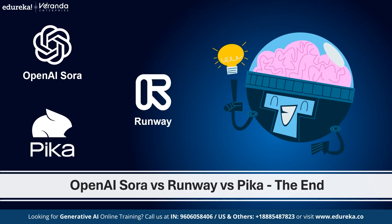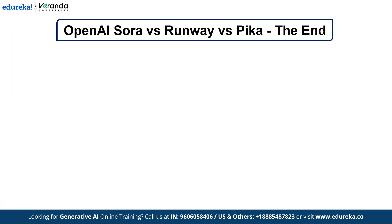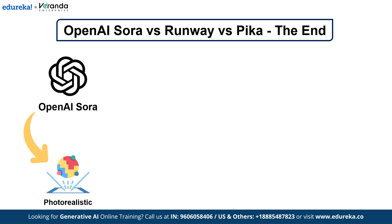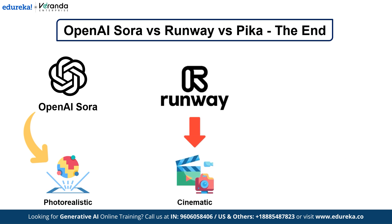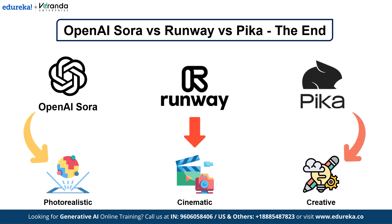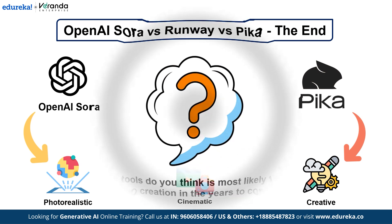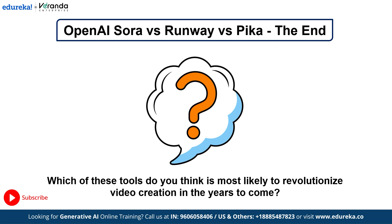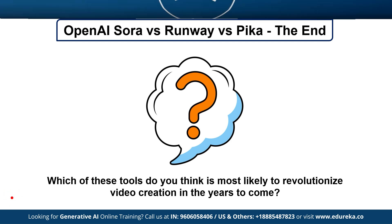And with this, we have come to the end of this video on OpenAI Sora vs Runway vs Pika Labs. To wrap it up: OpenAI Sora is your pick for photorealistic, detailed videos. Runway offers a cinematic touch with dynamic camera movements, though it lacks some texture refinement. Pika Labs shines for quick creative videos but doesn't quite match the detail and realism of the others. Depending on your needs, each tool has its strengths — choose Sora for realism, Runway for cinematic flair, and Pika for speed and creativity. Let me know in the comments which of these tools you think is most likely to transform video creation in the years to come.